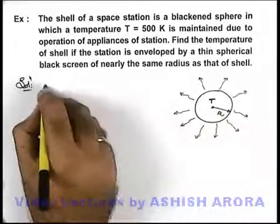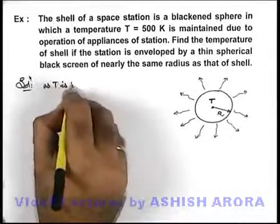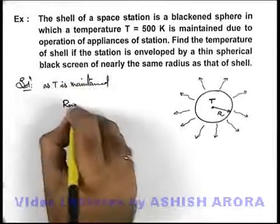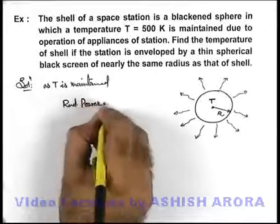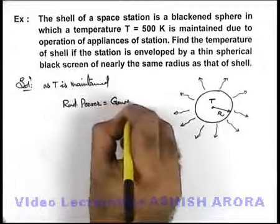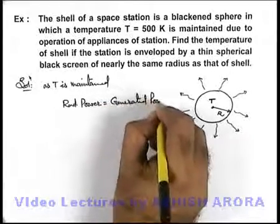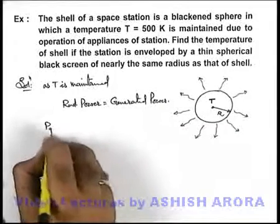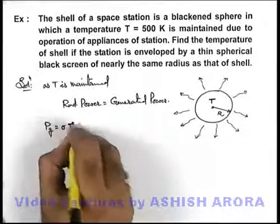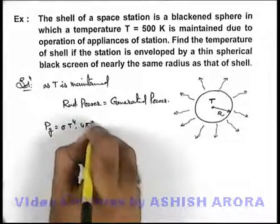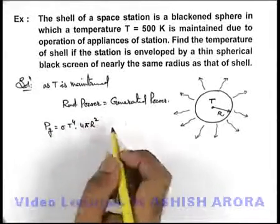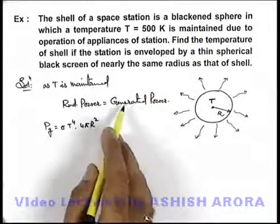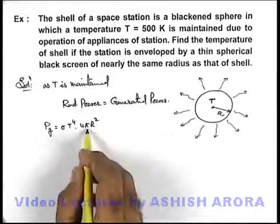So in this situation, as T is maintained, we can state that radiation power must be equal to generated power. We can directly write the generated power to be sigma T to the power four into four pi r squared, which is sigma A T to the power four. As it is already given that the sphere is black, we can take its emissivity to be one. So total generated power can be written as sigma A T to the power four.